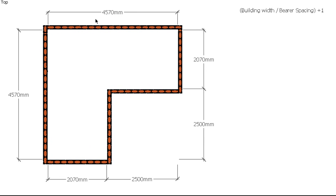The formula for bearers is the building width divided by the bearer spacing, and then we add 1. When we talk about the building width, we commonly try to run the bearers the length of the building. In this case the dimensions are the same either way, so I'm going to pick a direction and run the bearers this way.